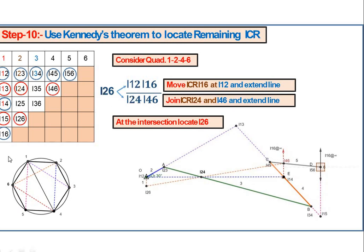To locate I26, join points 2 and 6. On one side use I12 and I16, and on the other side use I24 and I46. I24 is located, I46 is on CD. Extend the line through I24 and I46, and draw I16 (infinity, parallel line from O downward). Their intersection gives ICR I26.